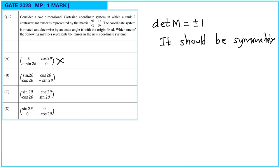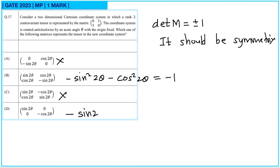The second one is symmetric with sin²(2θ), and its determinant will be minus sin²(2θ) minus cos²(2θ), which equals minus 1. The third is not symmetric. For the fourth, the determinant is minus sin(2θ)·cos(θ)·cos(2θ), which is not equal to plus or minus 1. So option B is correct.